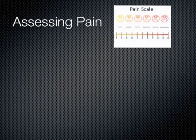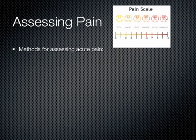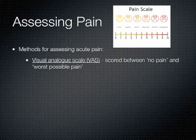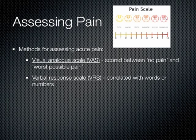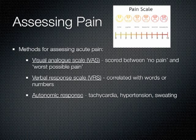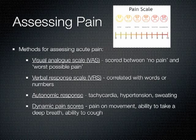There are four common methods used in assessing acute pain. The first is a visual analog scale, scored between no pain and worst possible pain. A verbal response scale is similar but correlated with words — for example, mild, severe, or excruciating — or to a number like 2 out of 4. At UCH, pain scoring from 0 to 4 is most commonly used. Autonomic responses like tachycardia, hypertension, and sweating, as well as dynamic pain scores like pain on movement, ability to take a deep breath, or the ability to cough, can be very helpful in assessing a patient's pain level.